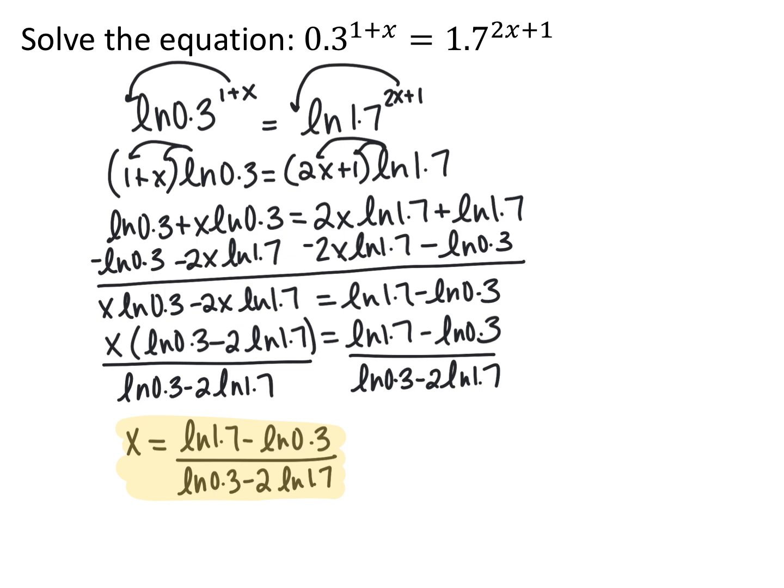So when you have exponents on both sides and you can't make one base equal the other, one alternative is to take the log or natural log of both sides and use log properties to solve. Just remember that a log or natural log of a number is just a number and you can treat it that way.